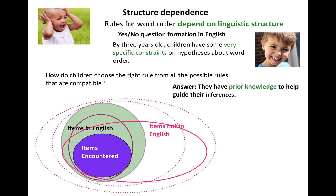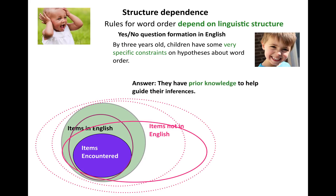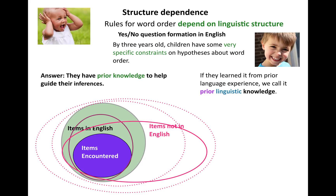The answer is that they have some kind of prior knowledge to help guide their inferences. And the question is, where did this knowledge come from? So one answer is that if they learned it from prior language experience, we would call this prior linguistic knowledge — your experience with the language has led you to infer certain types of constraints, cashed out as having certain ideas about the rules for yes-no question formation.